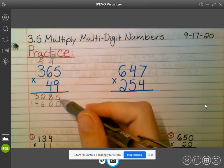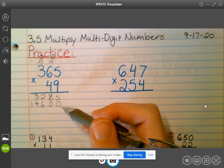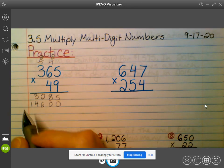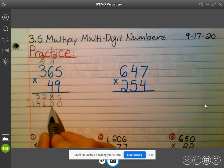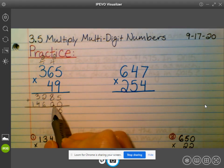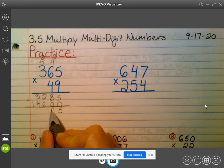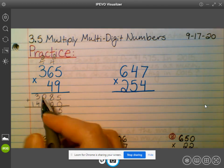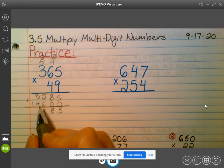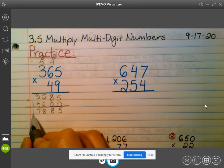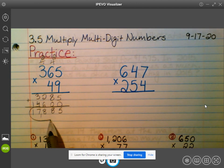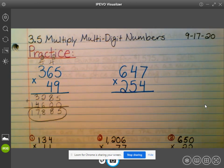What do we call these two numbers down here? Partial products. Nice. Can we add them? Five plus zero is five. Eight plus zero is eight. Two plus six is eight. Four plus three is seven. And we bring down our one. So our total then would be 17,885. And I'm going to circle that since that's my final answer.